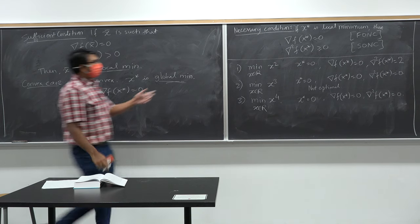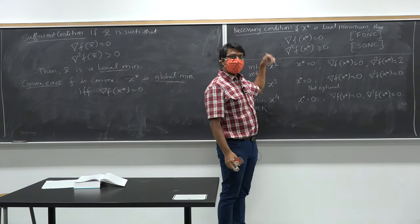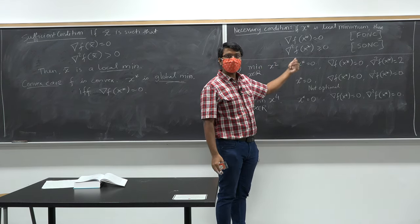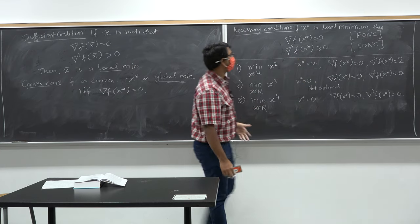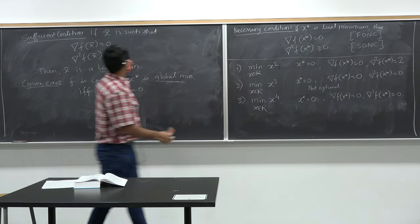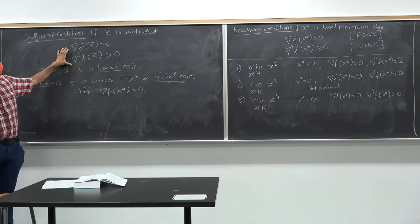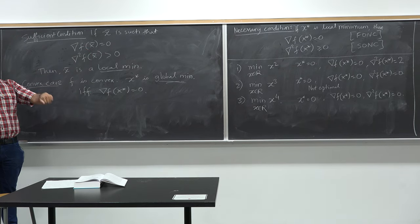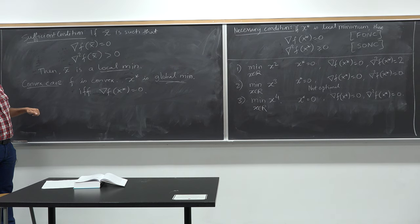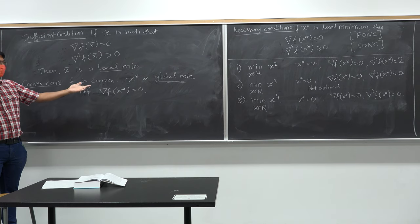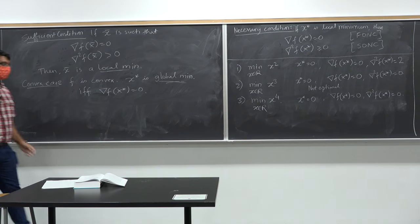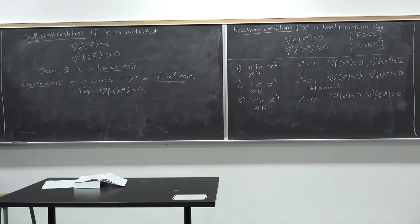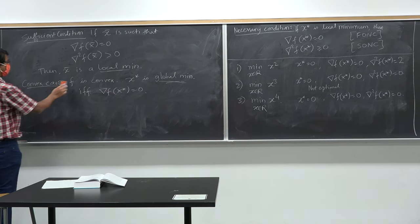To summarize: necessary conditions give us a certificate to say a point is not a local minimum. Sufficient conditions allow us to say a point is a local minimum. In the convex case, it is very easy to check whether something is a global minimum by checking the first derivative.